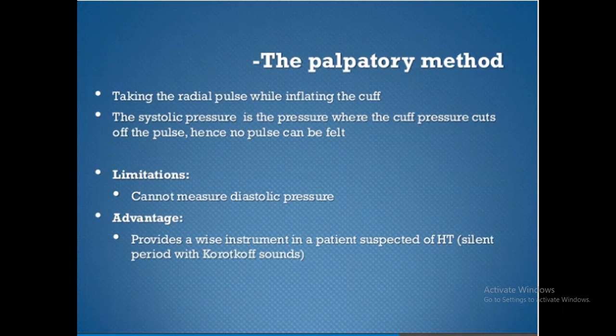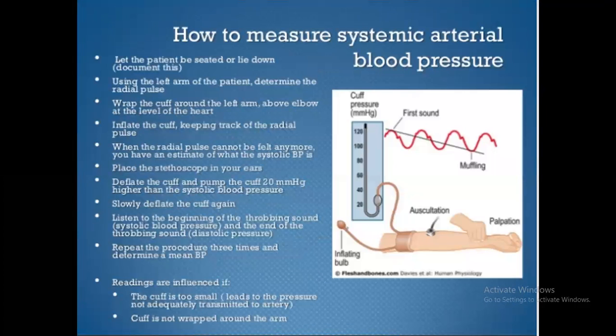The Palpatory Method. This involves taking the radial pulse while inflating the cuff. The systolic pressure is the pressure at which the cuff pressure cuts off the pulse, so no pulse can be felt. Limitation: cannot measure diastolic pressure. Advantage: provides a useful estimate in a patient suspected of hypertension where auscultatory sounds may be silent.